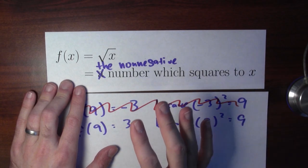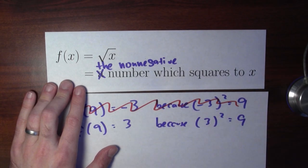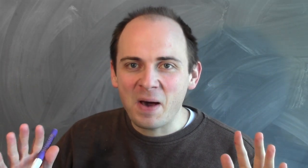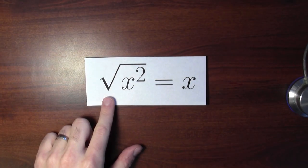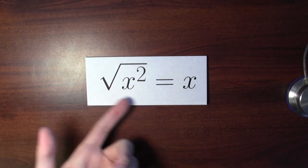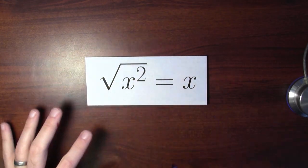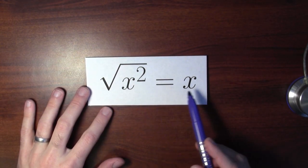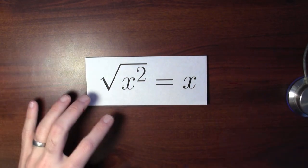There's one particular place where this plays out that's extraordinarily important. We've got our definition: the square root of x is the non-negative number which squares to x. There's one popular misconception that comes up because of this definition. You might be tricked into thinking that the square root of x squared is x. That's not true. Let's see why.